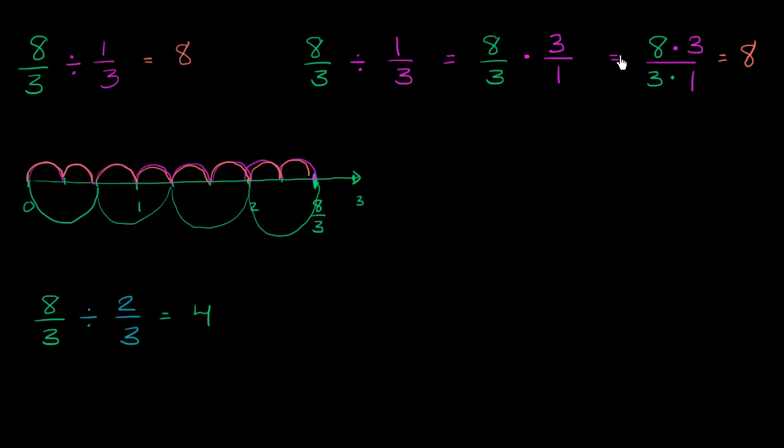Now, does this make sense in this world right over here? Well, if we take 8 thirds and we do the same thing, saying, hey, look, dividing by a fraction is the same thing as multiplying by a reciprocal. Well, let's multiply by 3 halves. Let's multiply by the reciprocal of 2 thirds. So we swap the numerator and the denominator. So we multiply it times 3 halves. And then what do we get?